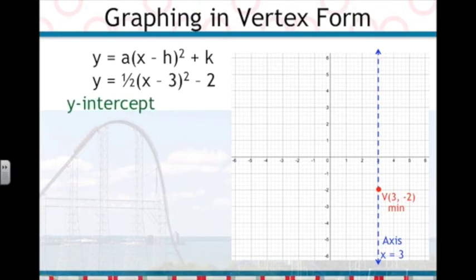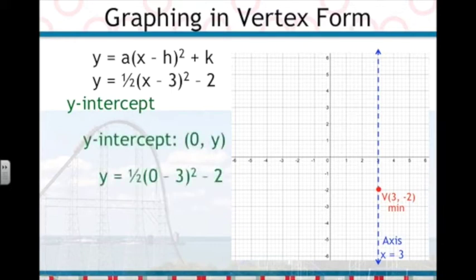The next feature we need to find is the y-intercept. The y-intercept is on the y-axis, which means it is a point with 0 as the x-coordinate. So we need to substitute 0 in for x in the equation.